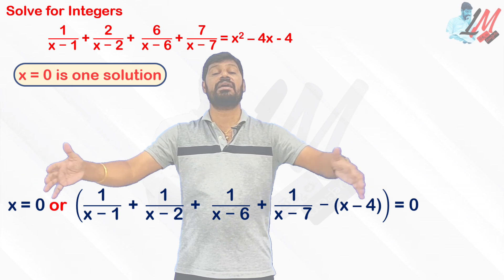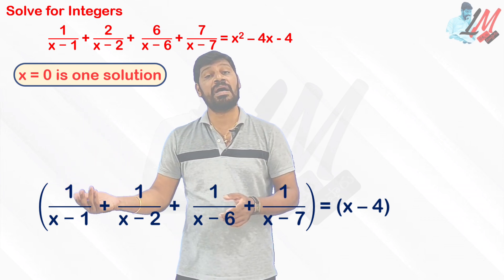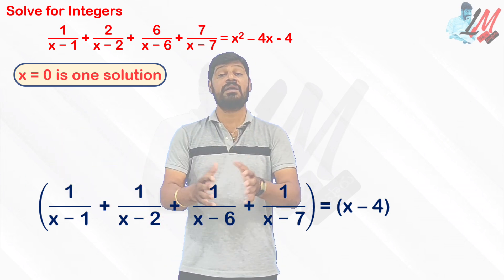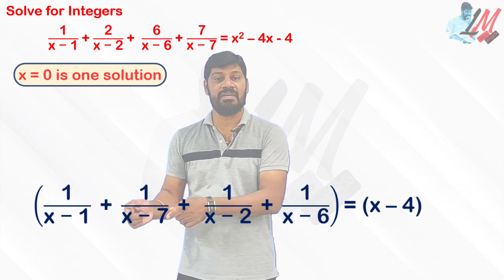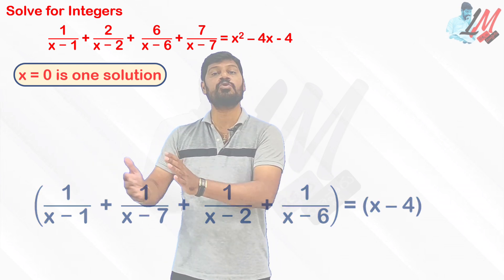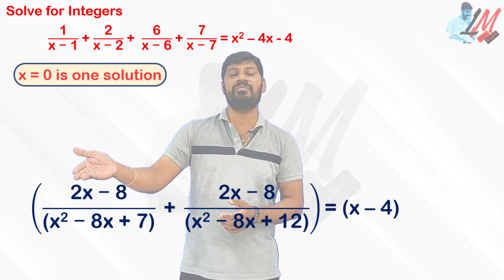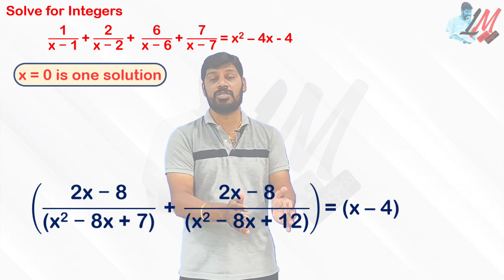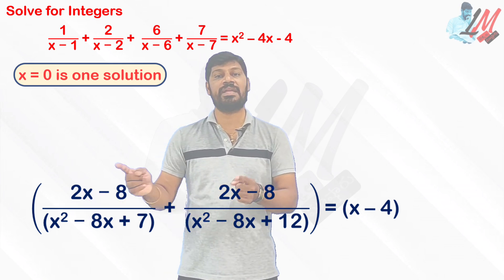Now when the bracket equals zero, transposing (x−4) gives us: 1/(x−1) + 1/(x−2) + 1/(x−6) + 1/(x−7) = x−4. I pair the terms logically: [1/(x−1) + 1/(x−7)] + [1/(x−2) + 1/(x−6)]. The first pair simplifies to (2x−8)/(x²−8x+7) and the second to (2x−8)/(x²−8x+12). Observe both numerators are 2x−8.